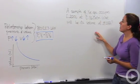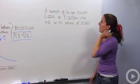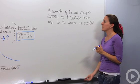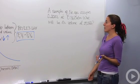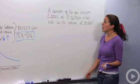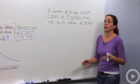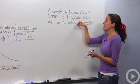Let's put this into practice. A sample of neon gas occupies 0.22 liters at 0.86 atmospheres. What will be its new volume at 29.2 kilopascals? The first thing you should notice is that when dealing with pressure, we want to make sure pressure is always in the same unit.